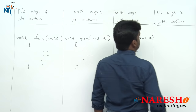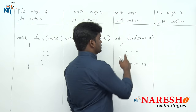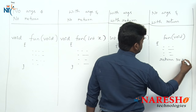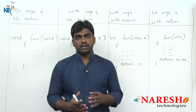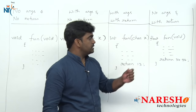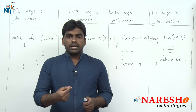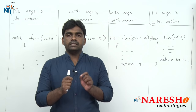The last classification is no arguments and with return values. For 'fun', no arguments means we write void. With return values — suppose it is returning 34.56, which is of float or double type. So the return type is also float. Classification: no arguments and with return values. Only four classifications are present for a function or method.